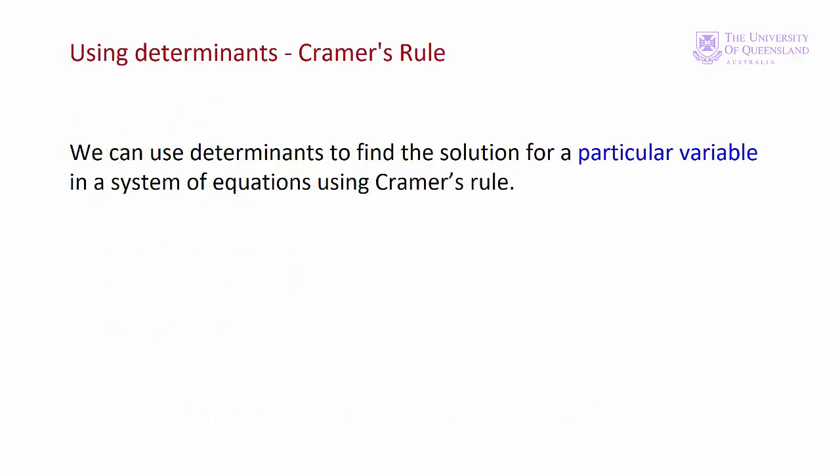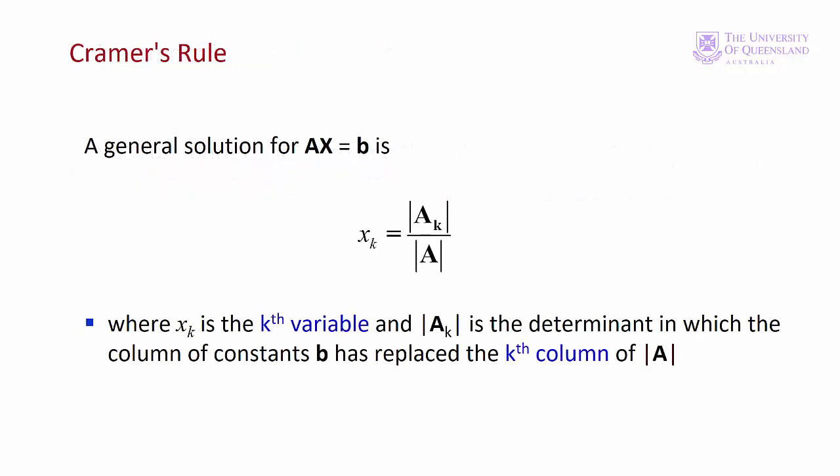Gabriel Cramer was a Swiss mathematician who published what is now known as Cramer's rule in 1750. This method is useful if we want to solve for just one variable in a system of equations. It's computationally inefficient for solving for all variables in systems of more than three equations. Cramer's rule is quite simple.